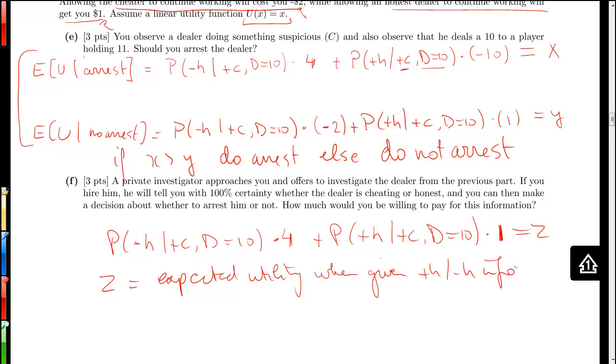Okay, so how much will we be willing to pay for this information? Well, if we do not have this information, we will get an expected utility of the max of X and Y, which we computed in the previous question. Here we will get Z. So the amount we're willing to pay is the difference between these two. We're willing to pay the difference between Z and the max of X and Y to the investigator to get that information.